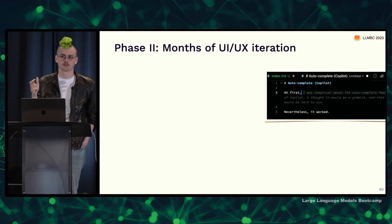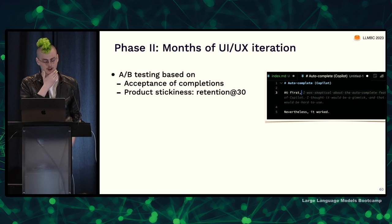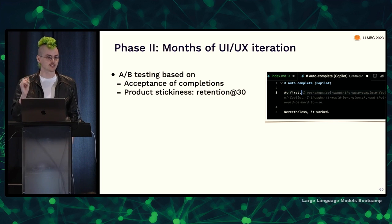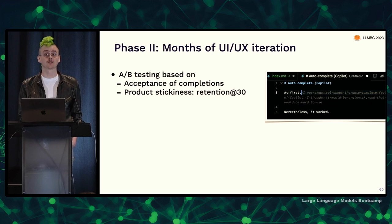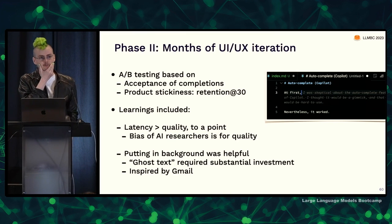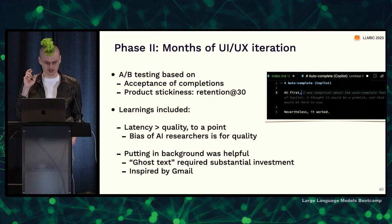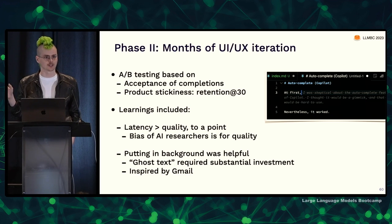They did months of internal alpha/beta testing on the user interface and experience — the playbook for really high quality design, including A/B testing of all features on users. They did that on the basis of both acceptance of completions, which is a really good metric, and product stickiness — looking at retention at the level of a month. Both metrics were really important, especially product stickiness for determining what really made this useful for people. Acceptance of completions works for capturing what users who are using your product are doing but doesn't capture users who aren't using your product.